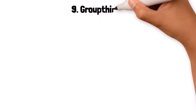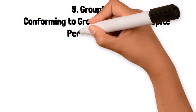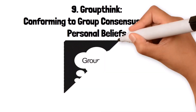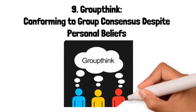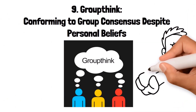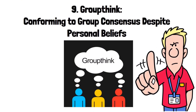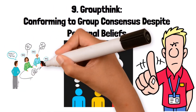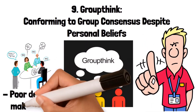9. Groupthink: conforming to group consensus despite personal beliefs. Groupthink is a phenomenon where the desire for harmony or conformity in a group leads to irrational or dysfunctional decision-making. Members of the group may suppress dissenting opinions, leading to a consensus that does not accurately reflect the views of all members. For example, in a business meeting, if the majority agrees on a particular strategy, others might go along with it even if they have reservations, leading to poor decision-making.